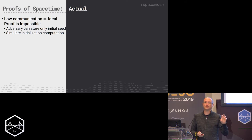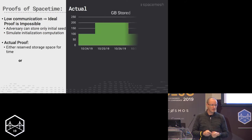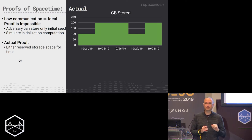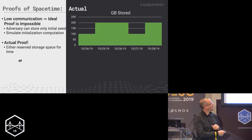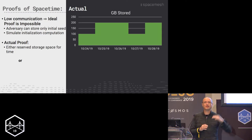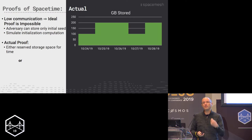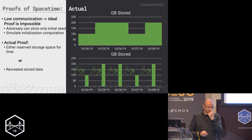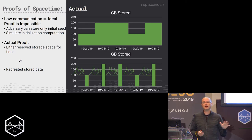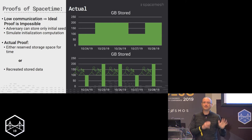So what do we actually get? A slightly weaker definition that we can achieve. We prove that you do one of two things. One: you could store the data — each time period you're storing some amount and the total space-time is the area under the graph. Or two: you might not have stored anything but just recreated the data each time. Maybe you stored just an initial seed, and every time you were asked to prove something, you did some work and recreated the data. This is what proof of space-time actually shows — I did one of these two things.